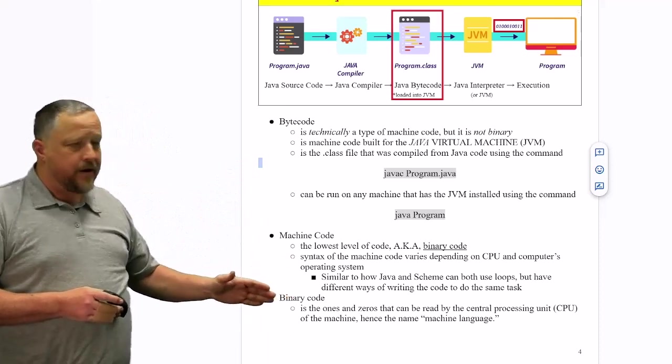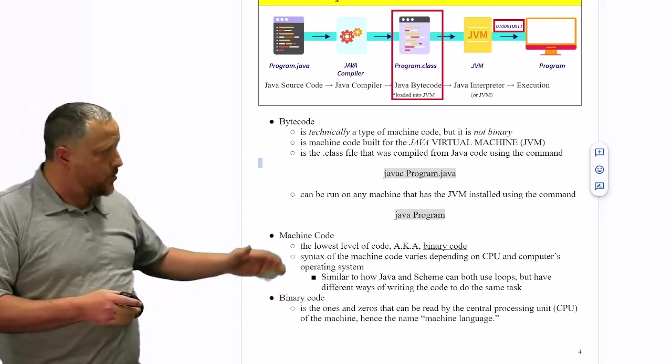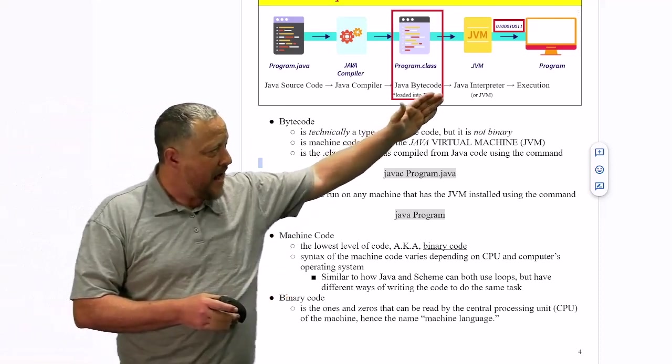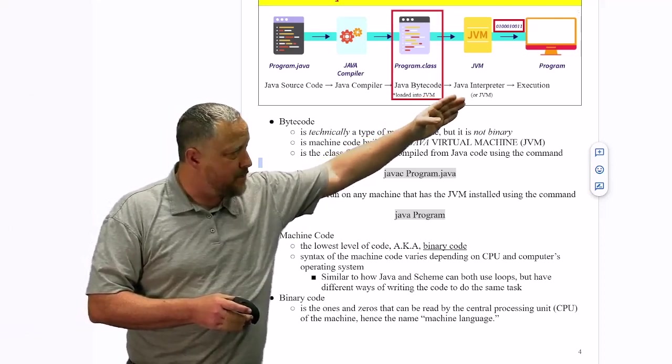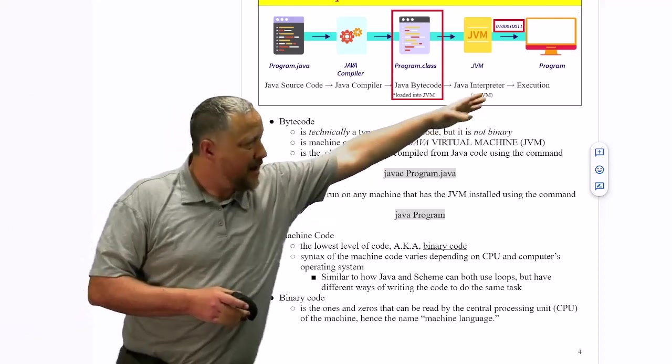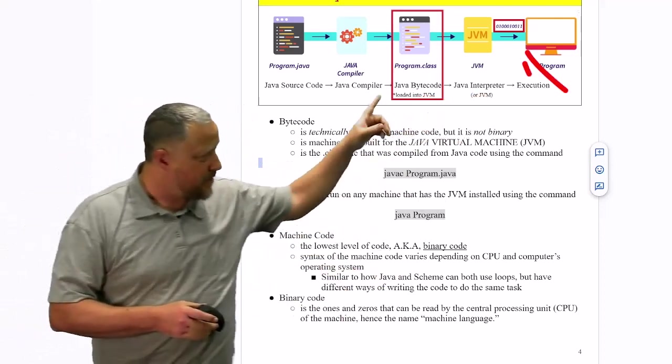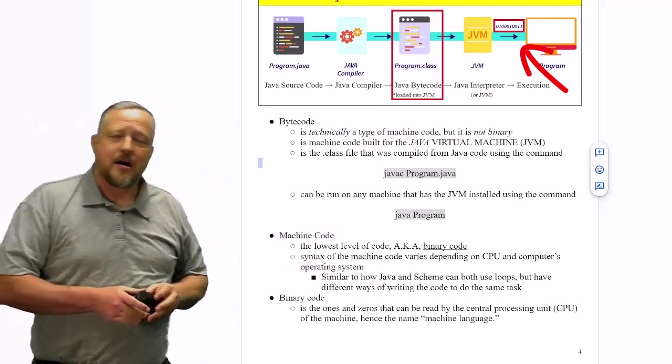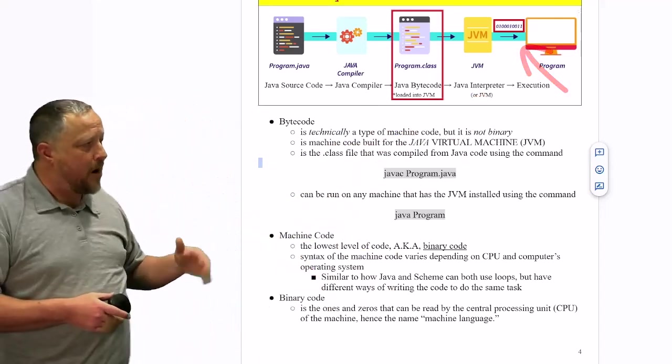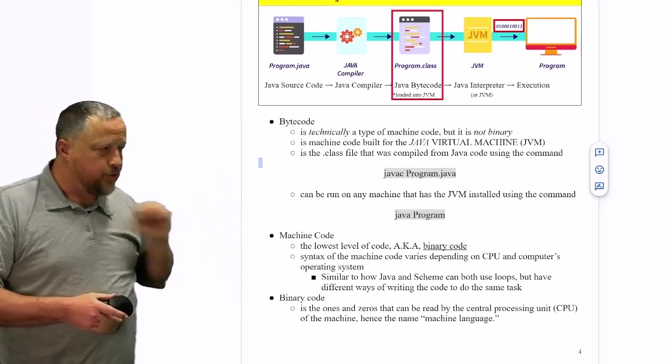The binary code literally is the ones and zeros. That's only going to happen after the bytecode has been translated by the interpreter and the JVM and then done for the execution. As a matter of fact, you see the ones and zeros being highlighted there. So that's the overall process from bytecode to the binary code.